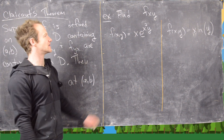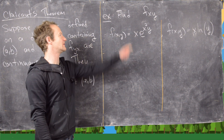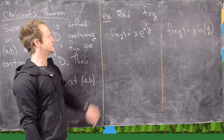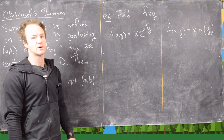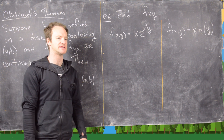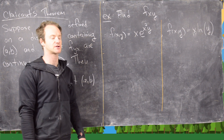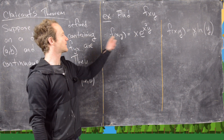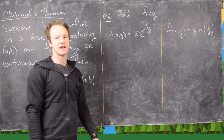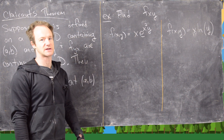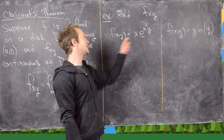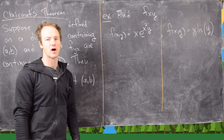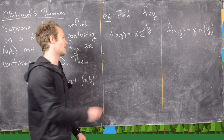Let's apply this theorem to take a mixed partial derivative. We want to find f_xy, so we need to choose: is it easier to take the derivative with respect to x first or with respect to y first? In this first example, it's easier to take the derivative with respect to y first, because if we take the derivative with respect to x, we'd have to use the product rule — we might as well save that for later.